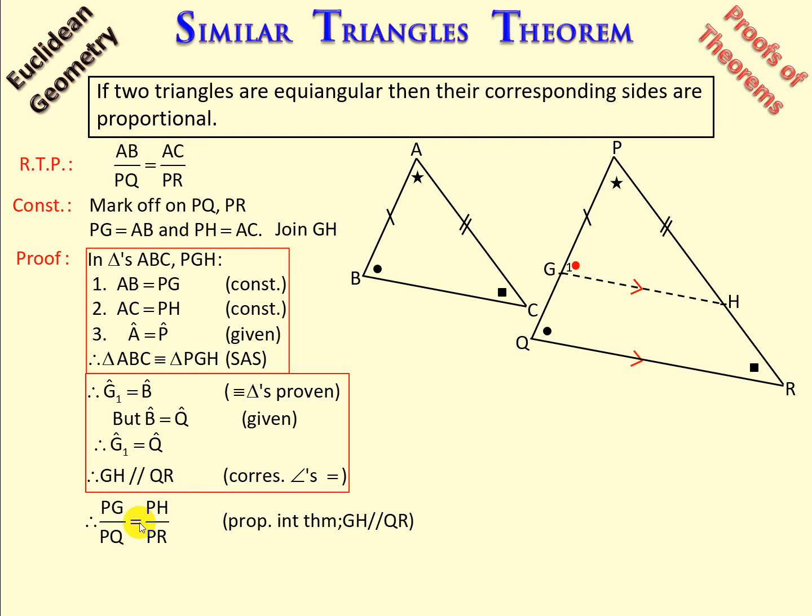Remember, in our construction, we marked off AB is equal to PG. So, I can replace my PG with AB, and I can replace my PH with AC.